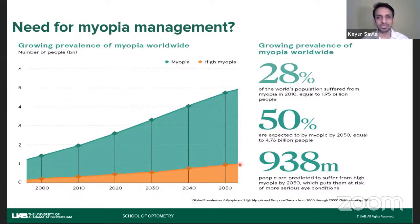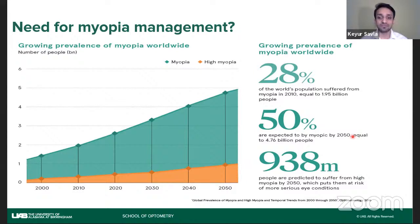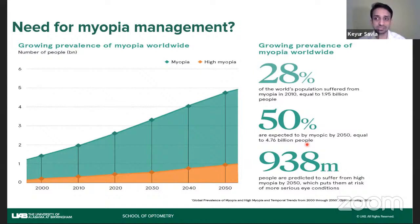Experts in this field, clinicians, and government organizations fear this would be a huge economic burden. The growth rate is about 28%, so it's fast rising, and half the world is expected to have myopia. One might wonder: why can't we simply prescribe glasses and contact lenses or do refractive surgeries for all these patients? What is this cause for concern?